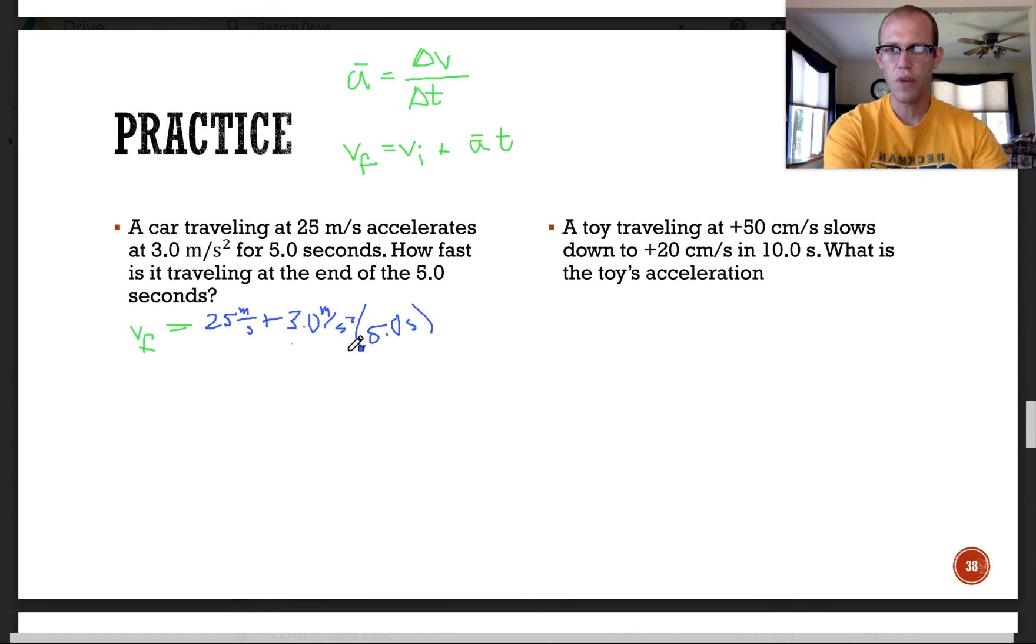So this right here, this is calculating how much my velocity is changing, the acceleration part. So when I go ahead and calculate that, I'll still have the 25 sitting here, plus 15.